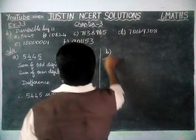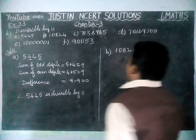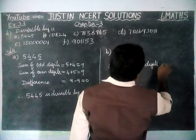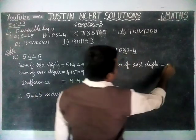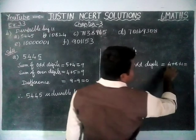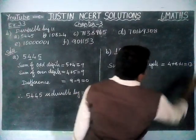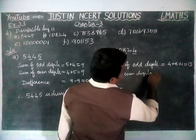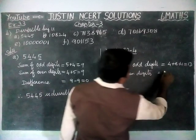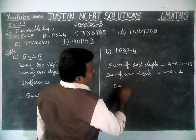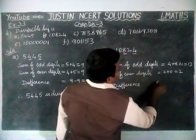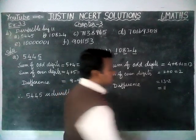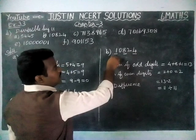We are going to check it for Option B. Sum of odd digits is equal to 4 plus 8 plus 1, which is equal to 13. Next, sum of even digits is equal to 0 plus 2, which is equal to 2. The difference is 13 minus 2, which is equal to 11. This 11 is divisible by 11. Therefore, the given number is divisible by 11.